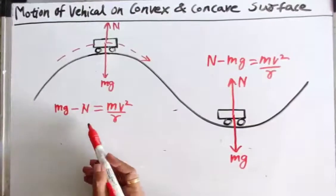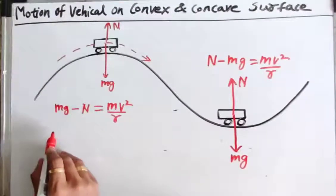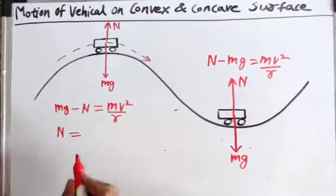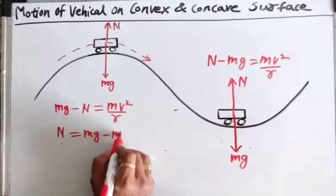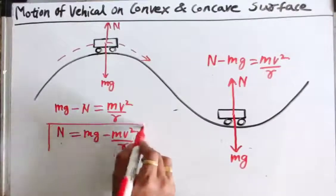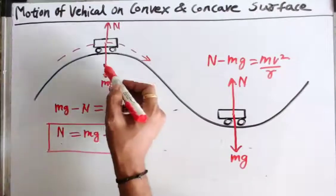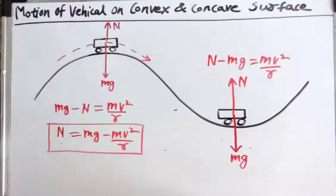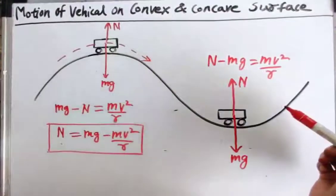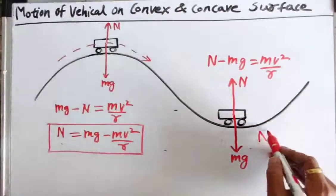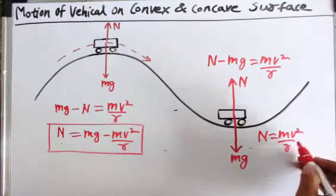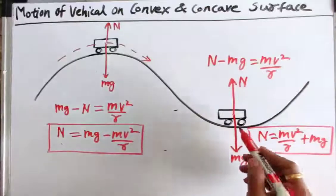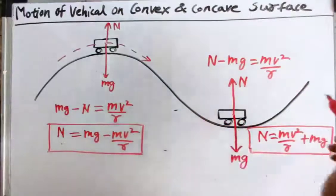In the case of the convex surface, from this equation we can write normal reaction n is equal to mg minus mv² upon r. This is the equation for the normal reaction acting on the vehicle when it is at the topmost position on the convex surface. Whereas in the case of the concave surface, from this equation, we can write n is equal to mv² upon r plus mg. This equation gives the normal reaction acting on a vehicle moving along the concave surface.